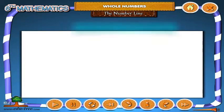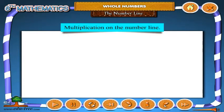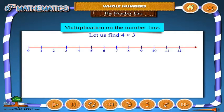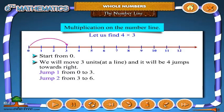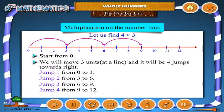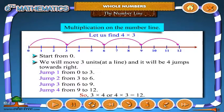Multiplication on the number line. Let us find 4 into 3. Start from 0, we will move 3 units at a time, making 4 jumps towards right. Jump 1 from 0 to 3, jump 2 from 3 to 6, jump 3 from 6 to 9, jump 4 from 9 to 12. So 3 into 4 or 4 into 3 is equal to 12.